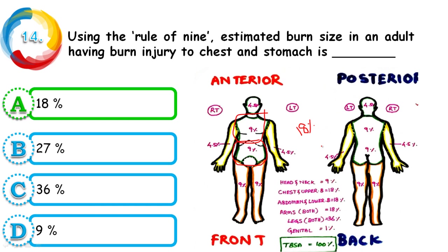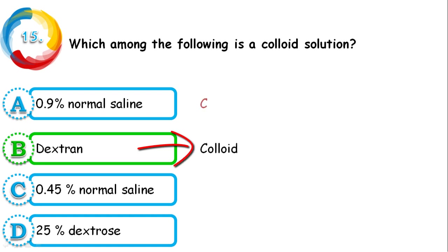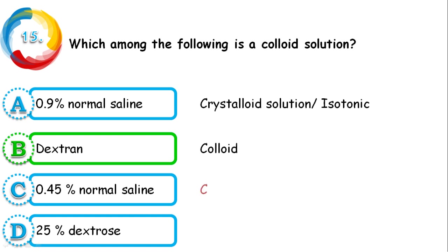Question 15: Which among the following is a colloid solution — 0.9% normal saline, dextran, 0.45% normal saline, or 25% dextrose? The correct answer is dextran, which is the only colloid solution listed. The remaining three — 0.9% normal saline, 0.45% normal saline, and 25% dextrose — are all considered crystalloid solutions.